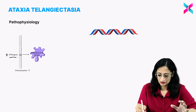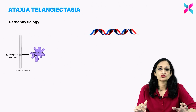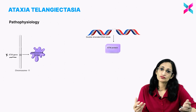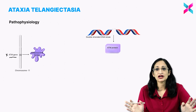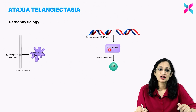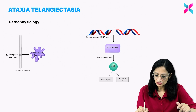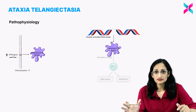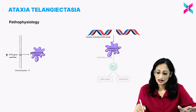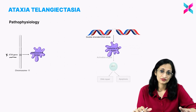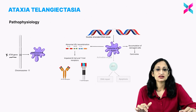When there is a break in the double-stranded DNA, the body must either repair it or eliminate the damaged cell by apoptosis. The ATM protein normally steps in and activates the P53 protein, leading to either DNA repair or apoptosis. If the ATM protein is defective, P53 will not get activated, neither DNA repair nor apoptosis occurs, and these double-stranded DNA breaks accumulate, increasing the risk of cancers. Additionally, the defective ATM gene leads to abnormal VDJ recombinations, impairing both B cell and T cell receptors, resulting in immunodeficiency and increased chances of sinopulmonary infections.